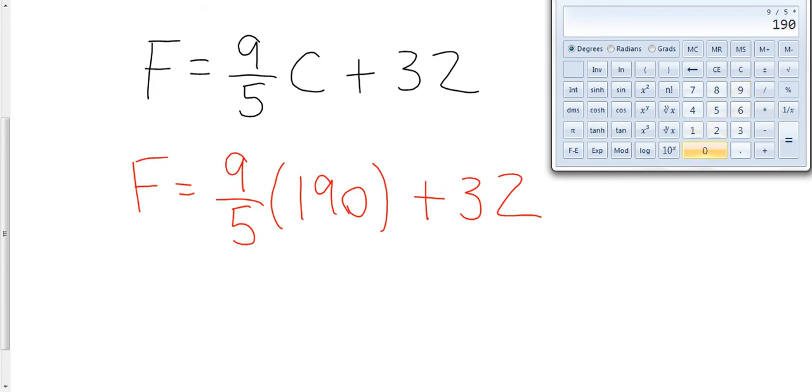And my calculator knows the order of operations, so I don't have to hit the equals sign here. And in fact, this is left or right anyway. So I'm just going to hit plus 32. And I'm getting 374.